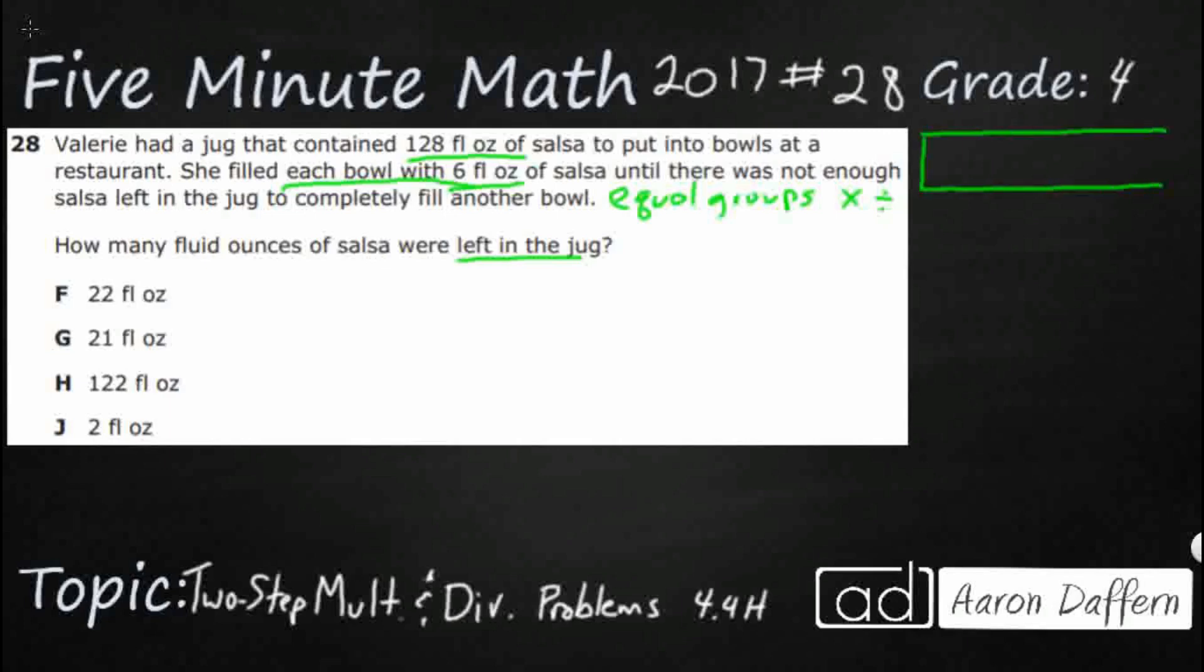I'm gonna draw a strip diagram to represent this. I've got my total up top. That's my 128 fluid ounces of salsa. And I'm gonna pour them into bowls of six. Six fluid ounces. And the question is, how many sixes can I get out of that 128?